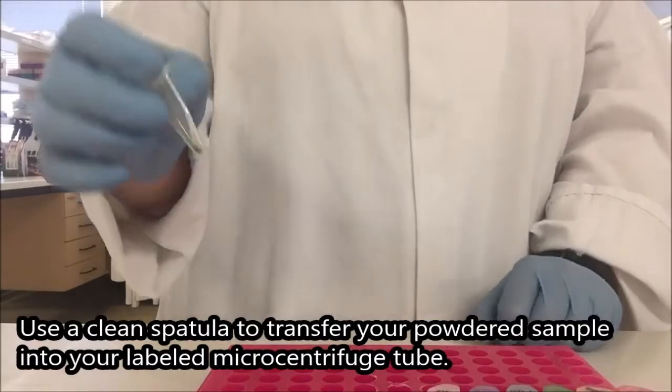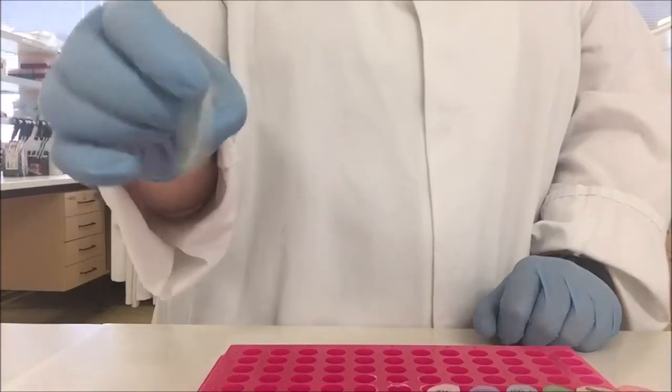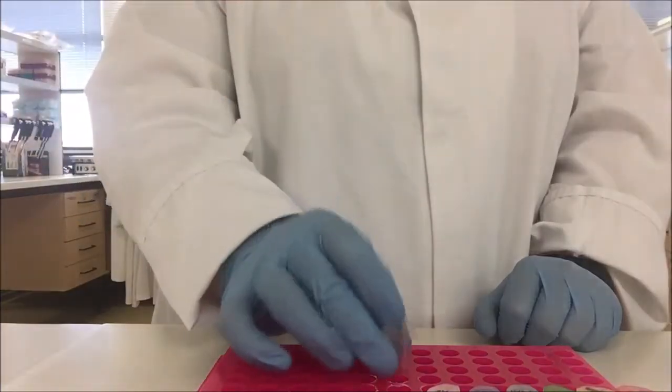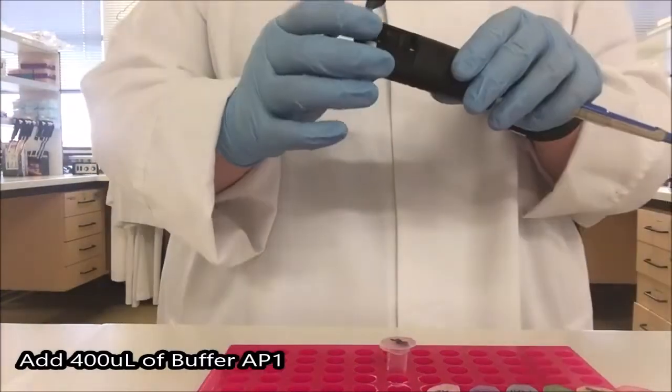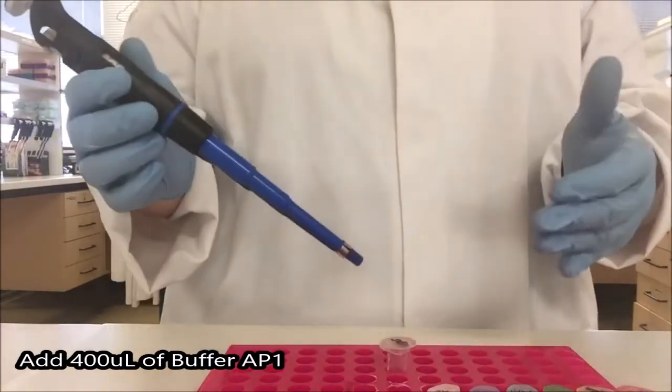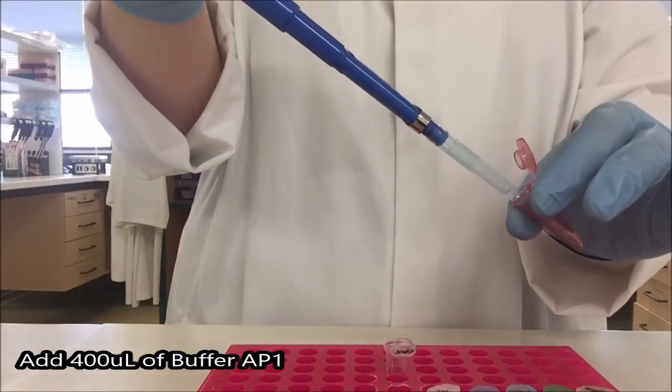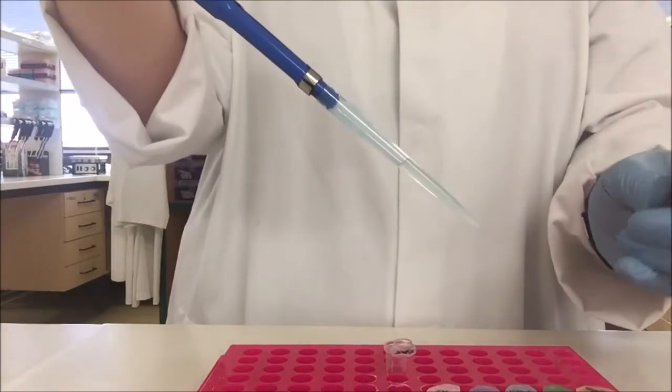Now I've disrupted my tissue sample and have a small amount of dry, crushed leaf material in my labeled microcentrifuge tube. Now I'm going to add 400 microliters of AP1. I'm using the blue pipette set to 040 or 0.4 of a mil. Pipette up slowly so that I don't get any splashing within my pipette tip.